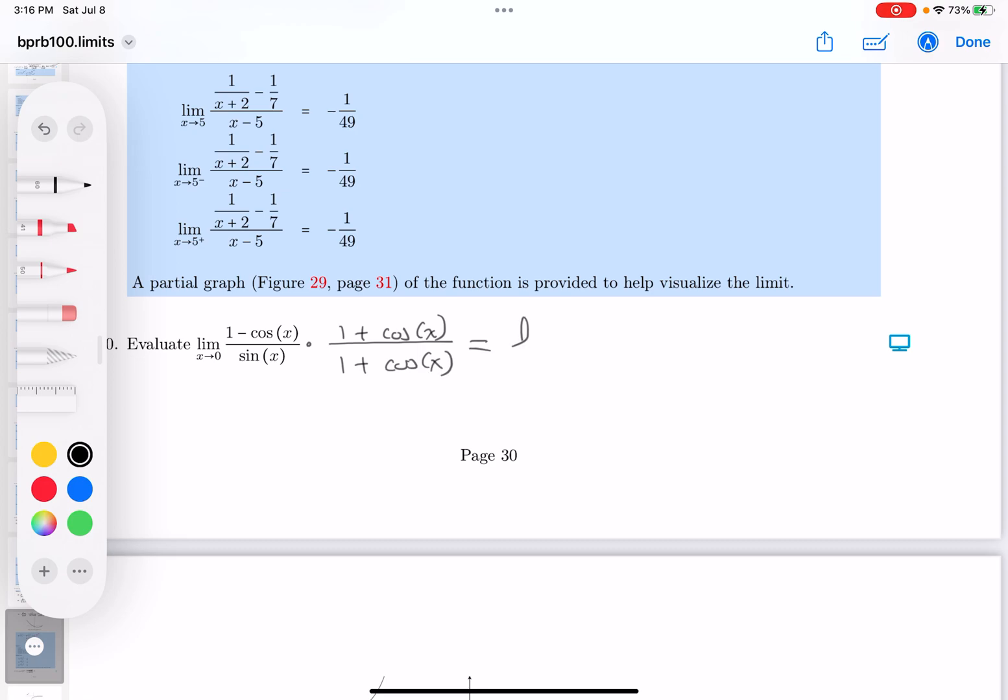What do you get over there? Limit as X goes towards zero. Well, if you multiply the top out, you're going to get one minus cosine squared.